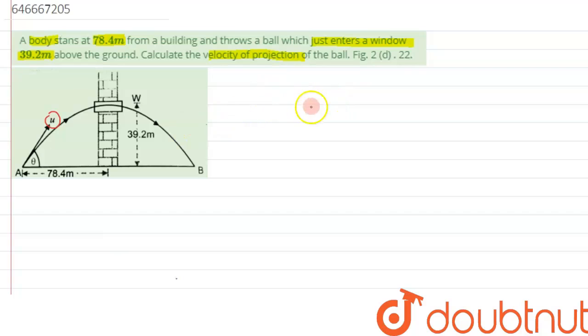Alright, so we know about range. The range formula is given by, we can write it as u square sine 2 theta divided by g.